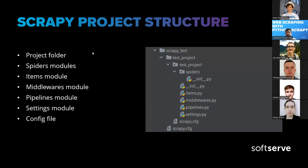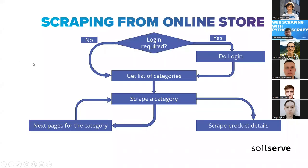We will be scraping data from an online retail web store. Let's review the typical algorithm for scraping data from an online store. First, clarify whether login is required or not. There are several cases: you cannot enter the site at all; you can enter but there are no prices without logging in; or all information is there but logged-in users get cheaper prices.